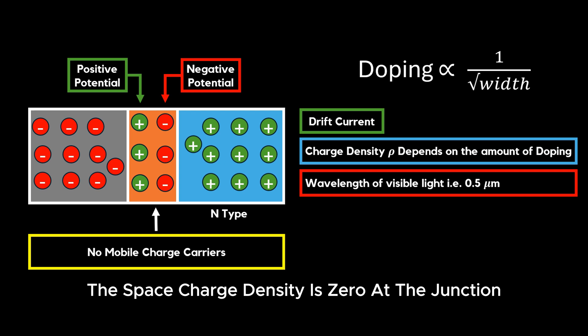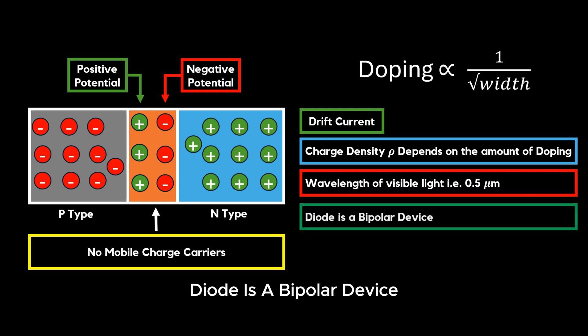The space charge density is zero at the junction. It is positive towards N-type and negative towards P-type. A diode is a bipolar device because current flows due to both minority and majority carriers.